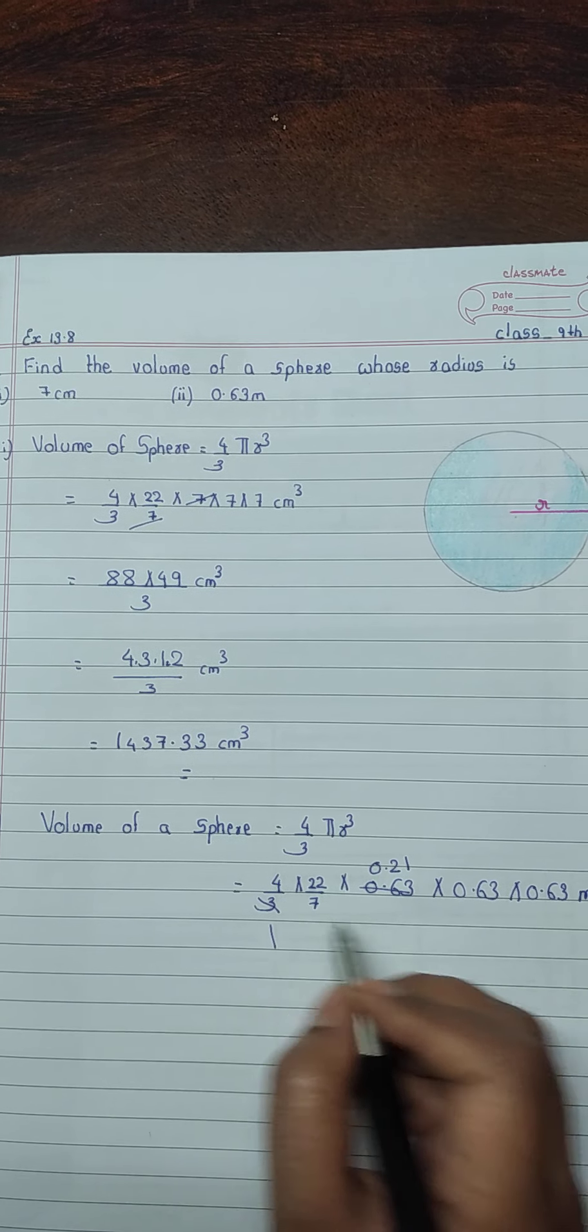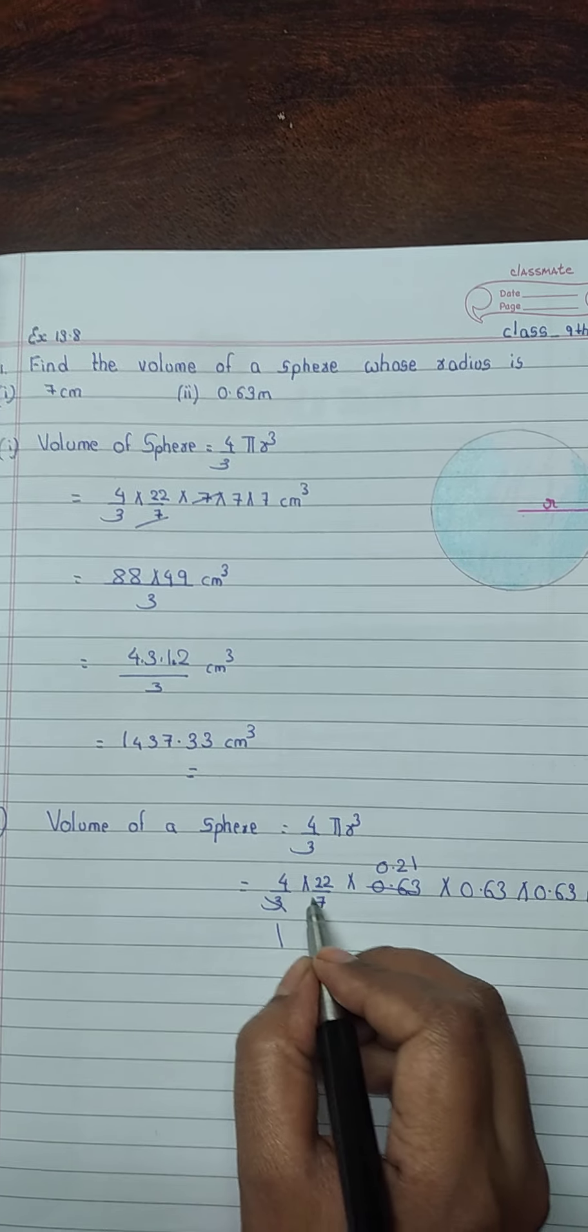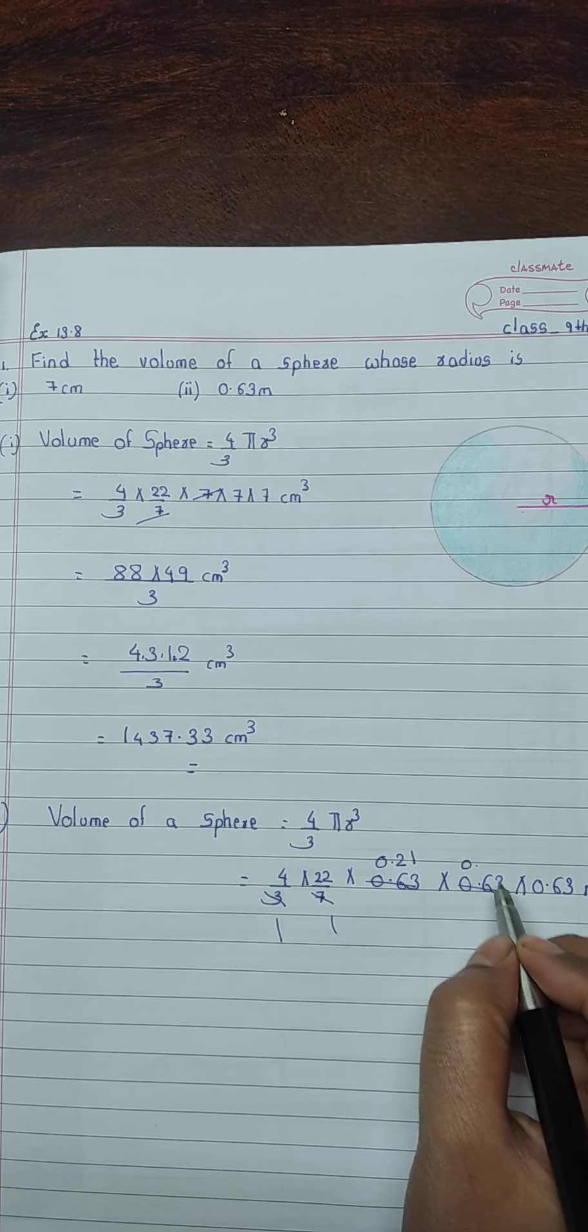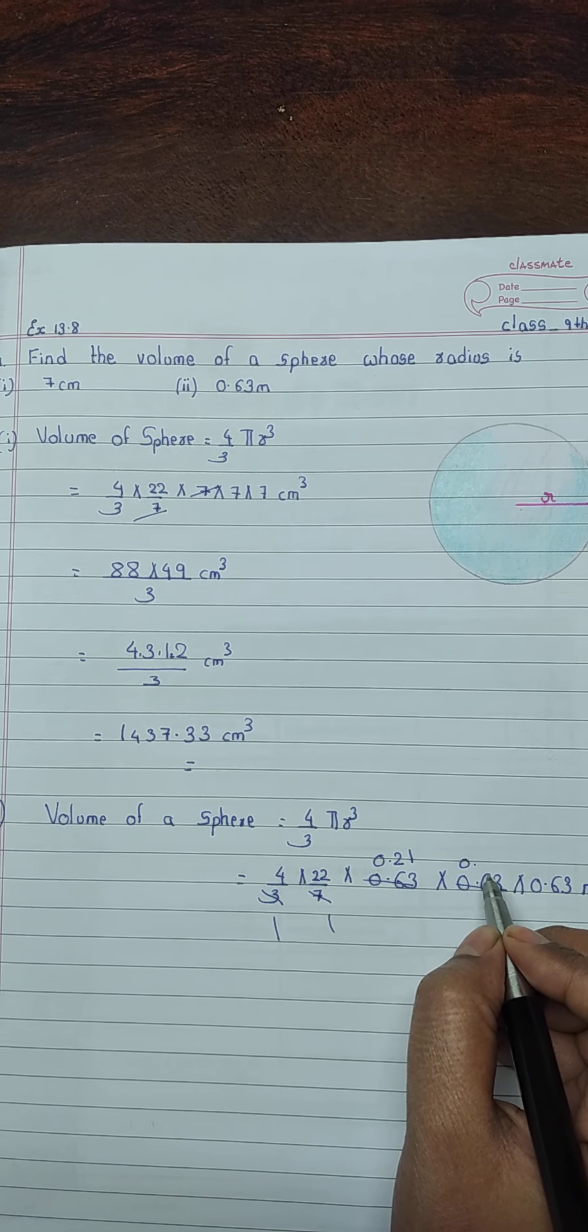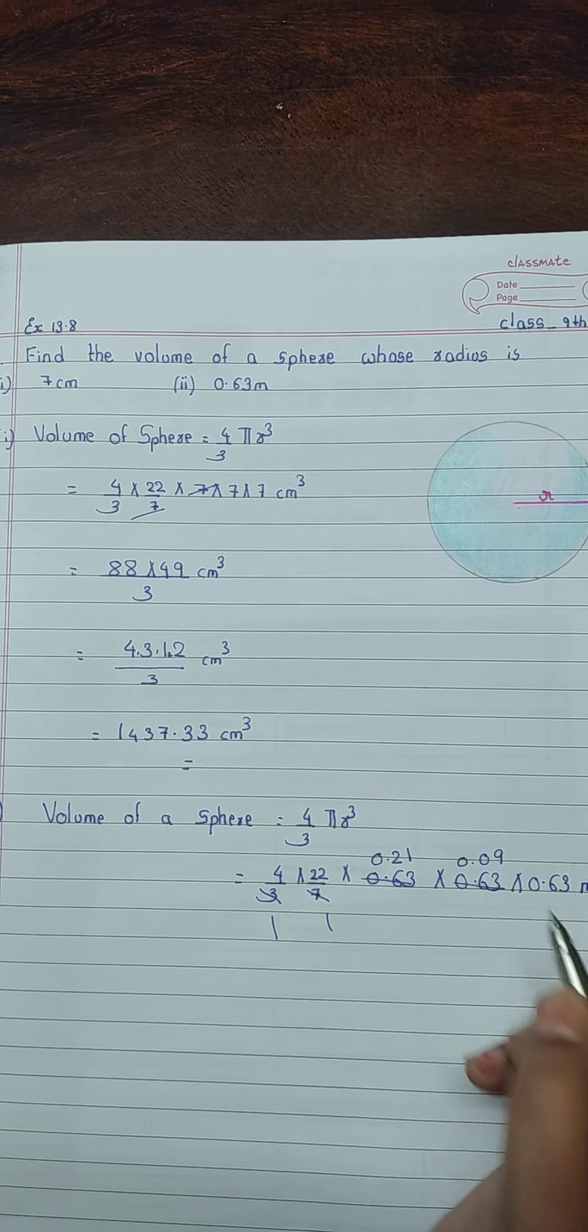0.63 is divisible by 7. 7 ones are 7, 7 zeros are 0, 6 is smaller than 7 so we'll put 0 again. 7 nines are 63.